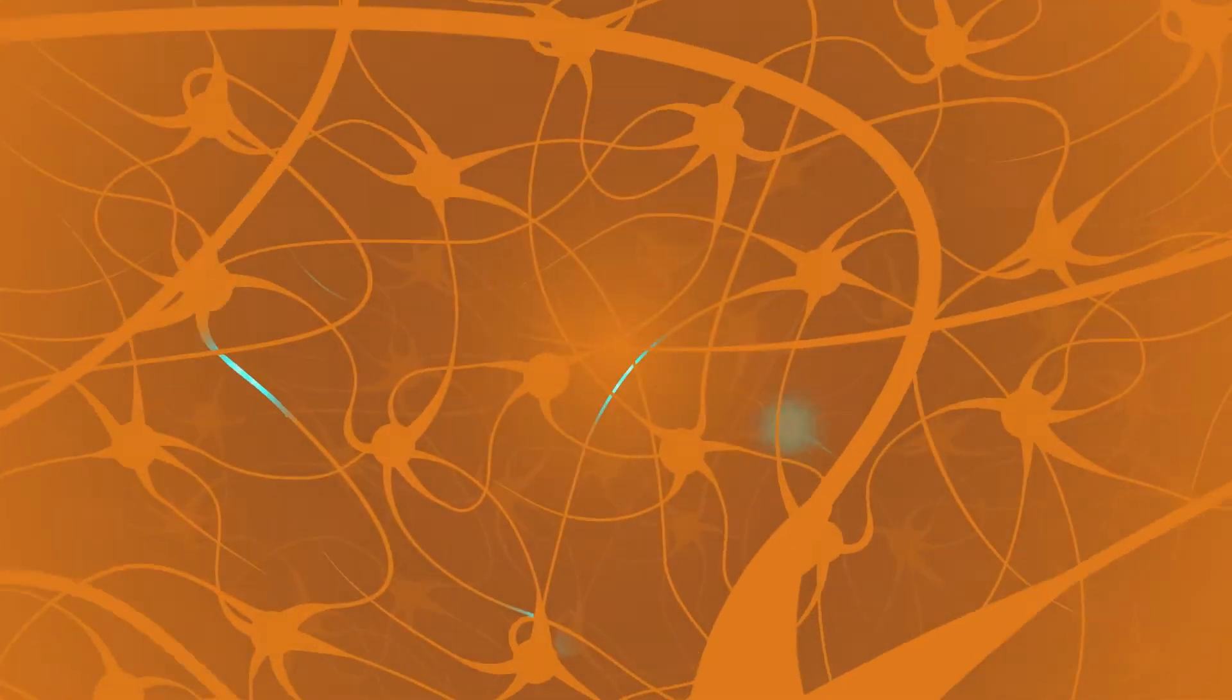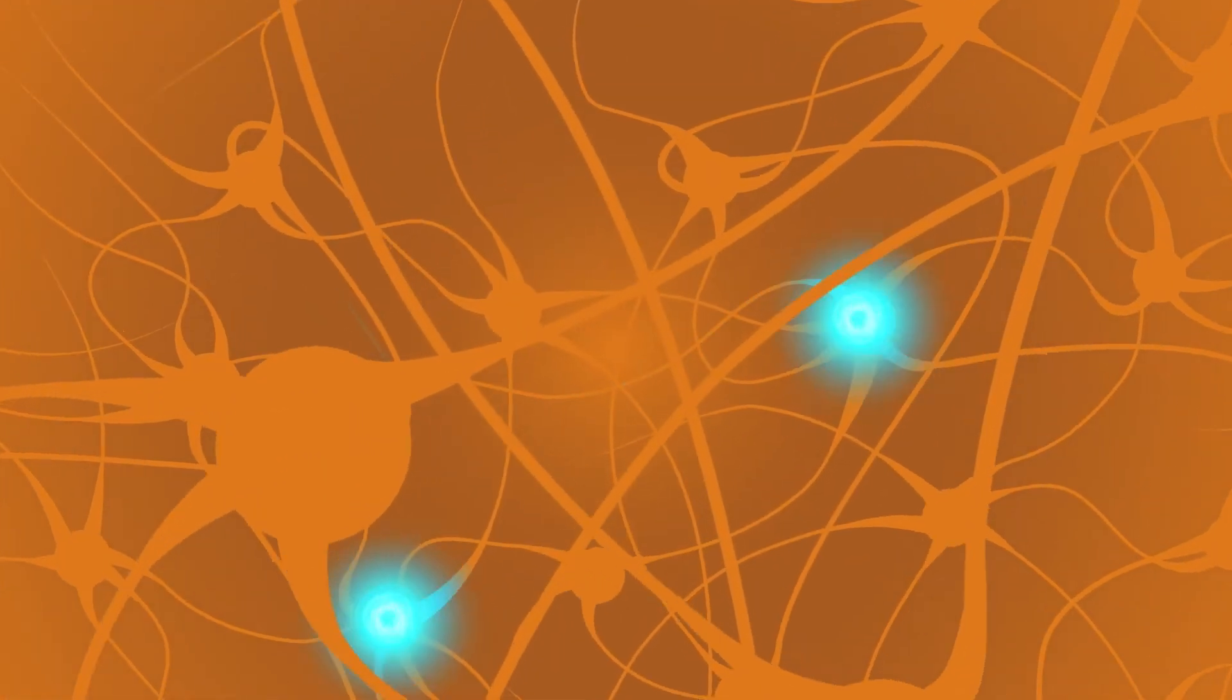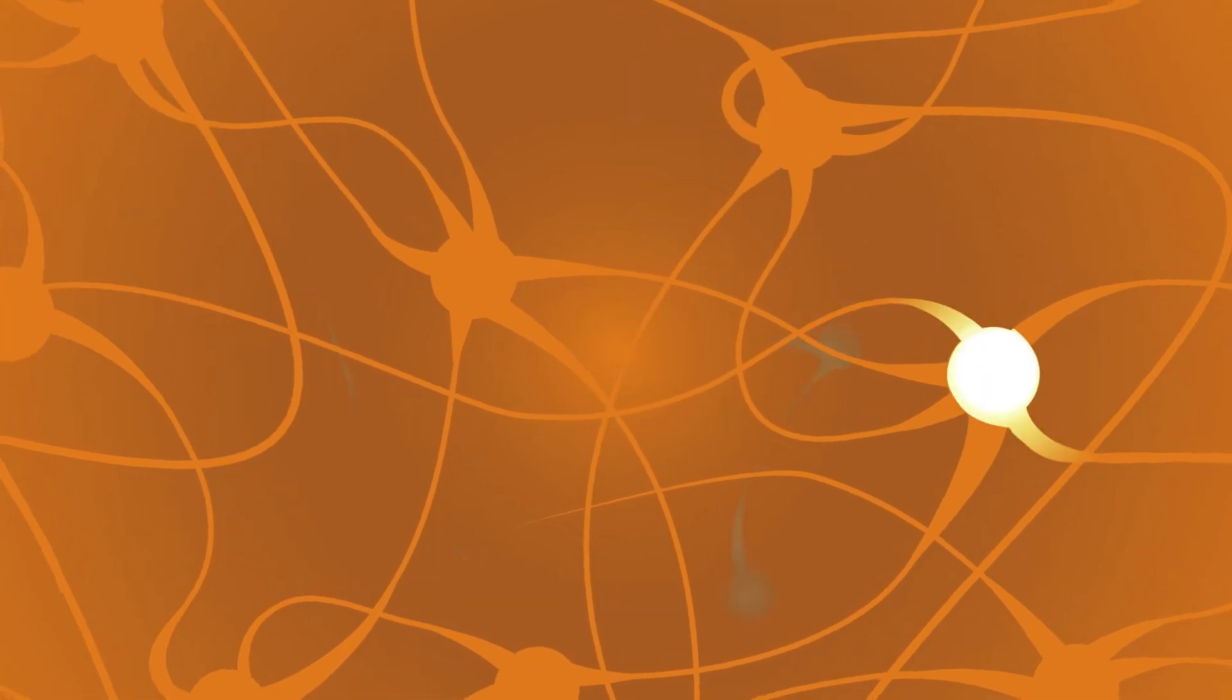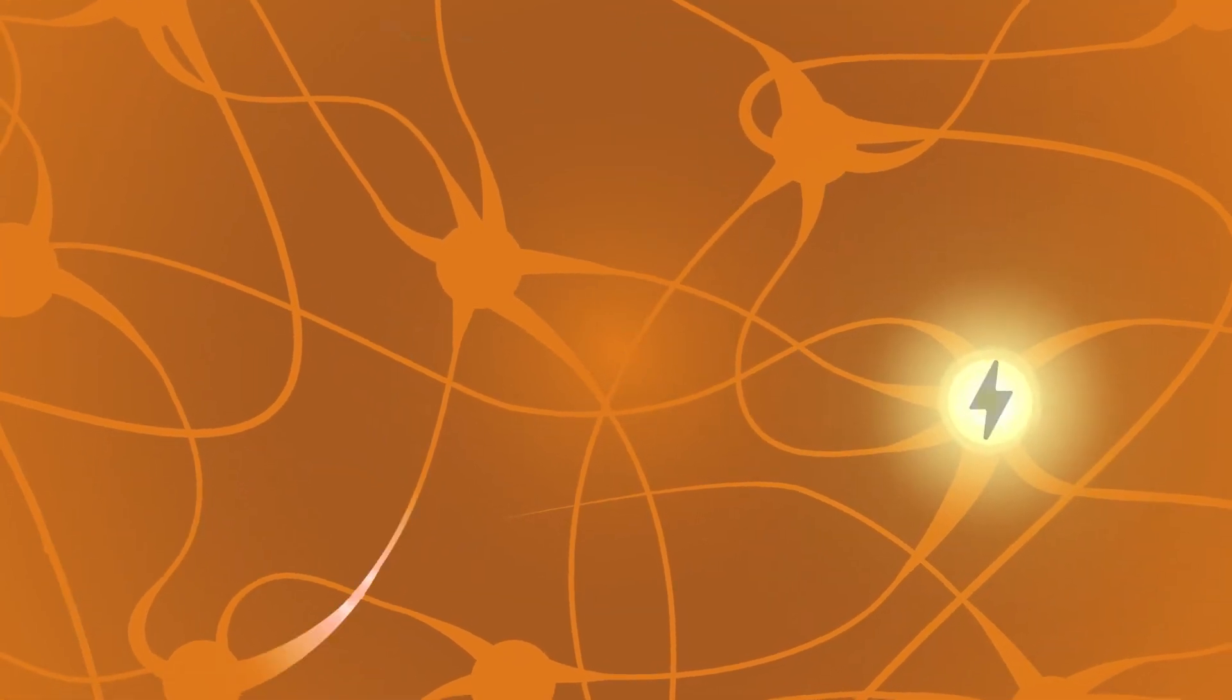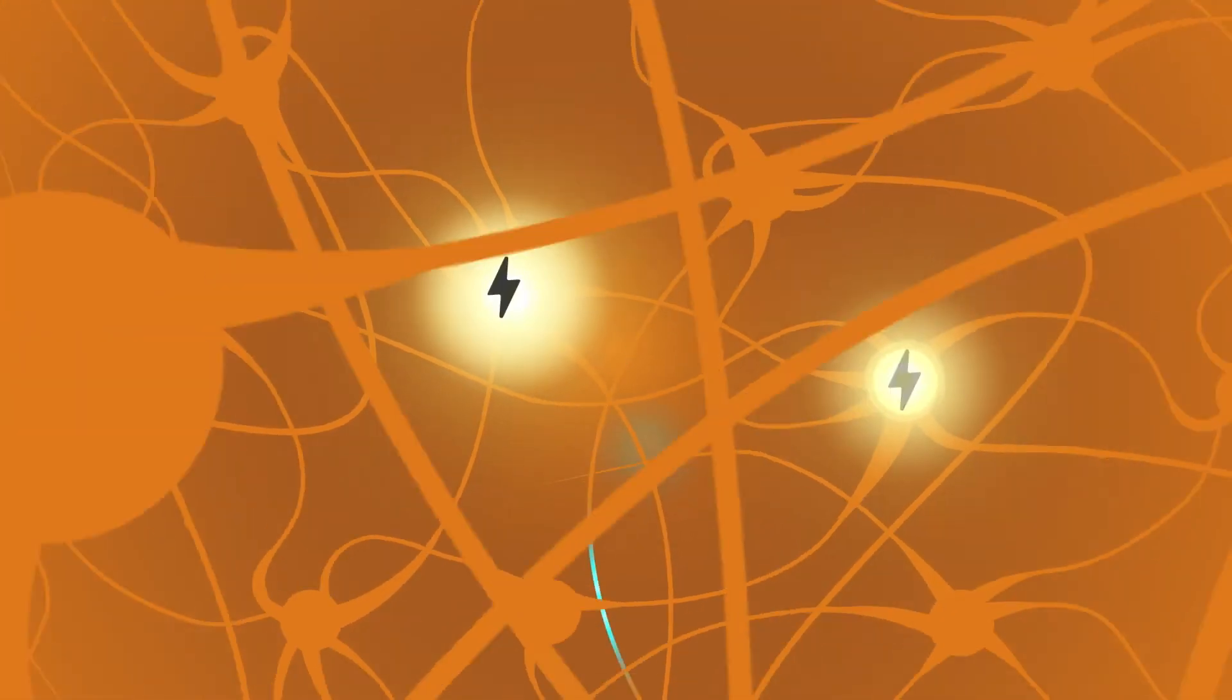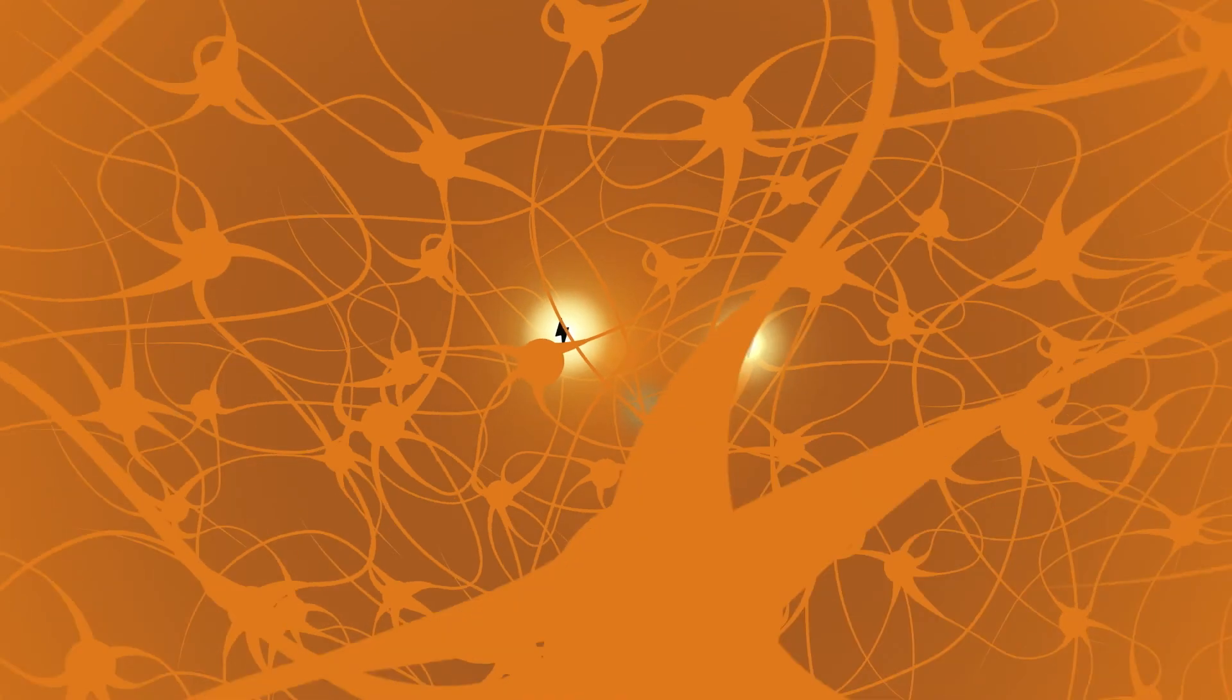This fast movement can cause the brain to bounce around or twist in the skull, creating chemical changes in the brain, and sometimes stretching and damaging the brain cells. A zoom in of the brain reveals a network of synapses with blue and yellow light traveling along the pathways and lighting up. The yellow lights leave black lightning bolts along the pathway when they light up.